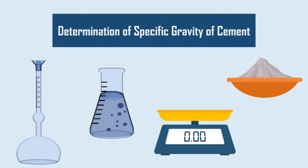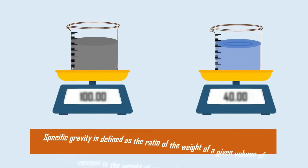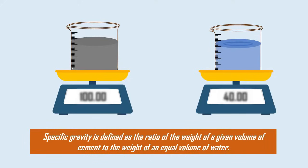Determination of Specific Gravity of Cement. Normally, specific gravity is defined as the ratio of the weight of a given volume of cement to the weight of an equal volume of water.